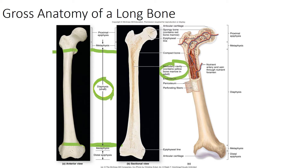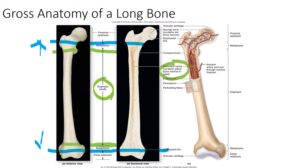The next region is the metaphysis, which is the region between the diaphysis and the epiphysis — the middle region. Here we find the epiphyseal growth plate, where bones continue to grow until individuals have hit their full adult stage. In males, this tends to be around 17 or 18 years of age; in females it can be as early as 14 to 16. Bones grow in the direction toward the ends at the metaphysis.